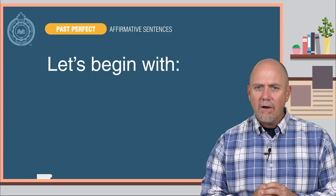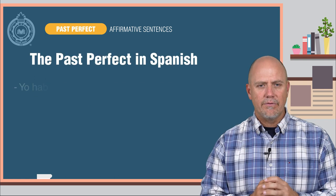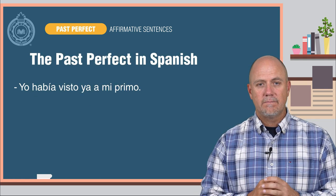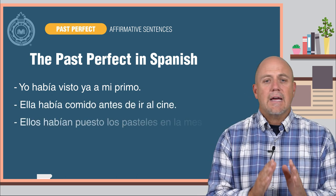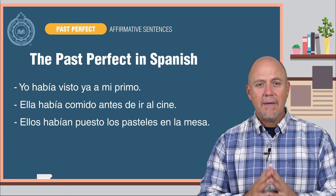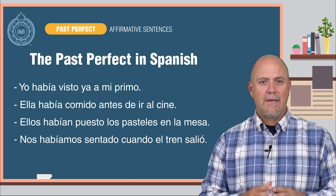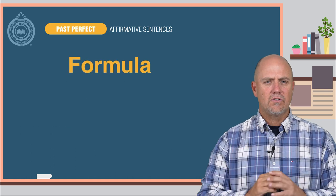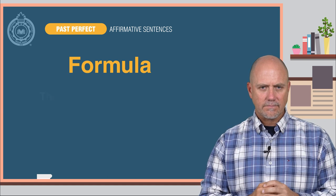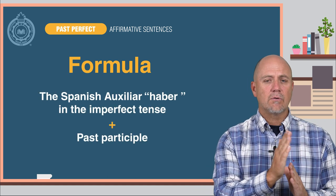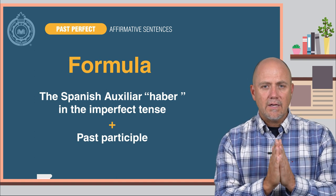Let's begin with what you already know — the past perfect tense in Spanish. Here are some examples: Yo había visto ya a mi primo. Ella había comido antes de ir al cine. Ellos habían puesto los pasteles en la mesa. Nos habíamos sentado cuando el tren salió. As you can see in Spanish, the past perfect is formed by following this formula: the Spanish auxiliary haber in the imperfect tense plus the past participle.